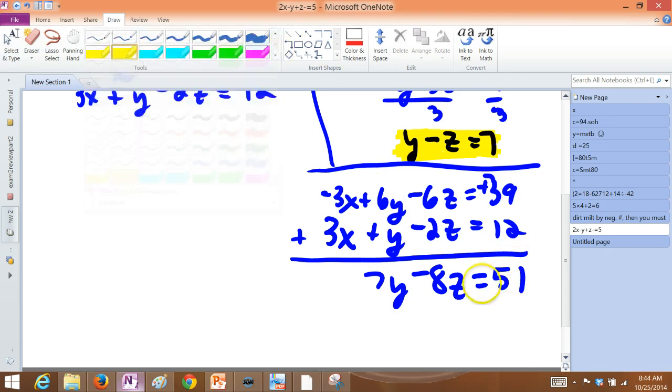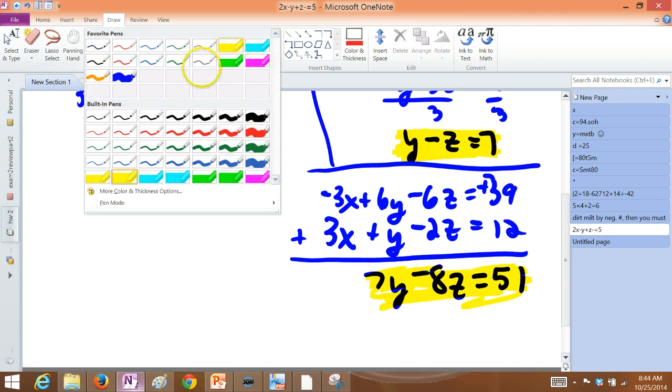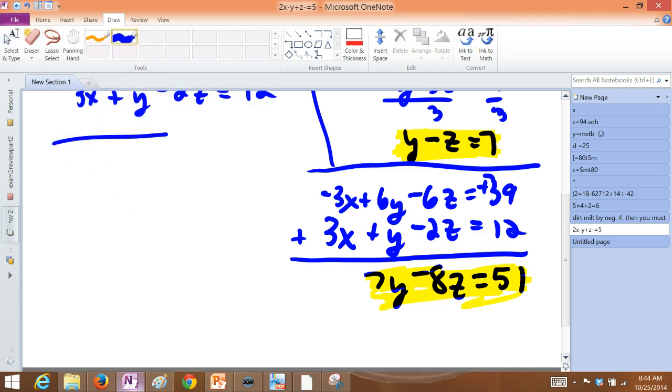So now we have what we need. Two equations in y and z. Now we pair those two up and solve those guys. On the one hand, we have that y minus z is 7. On the other hand, we have 7y minus 8z is 51.